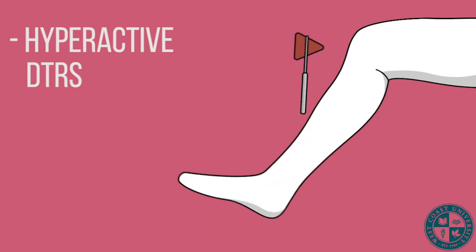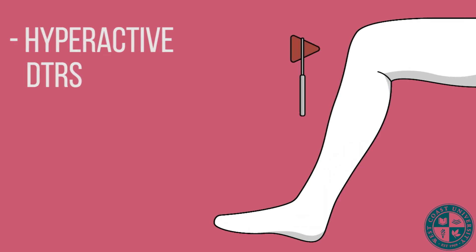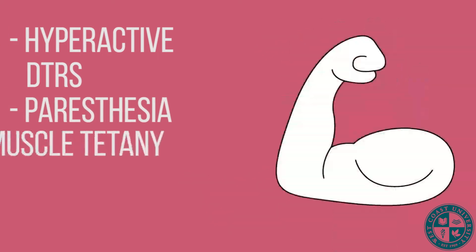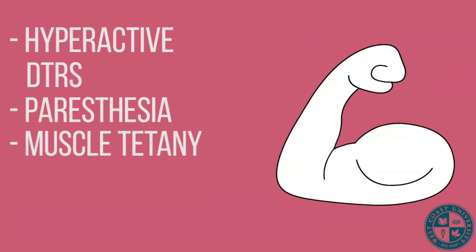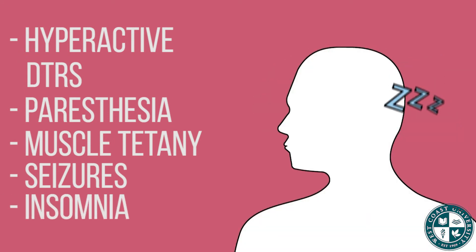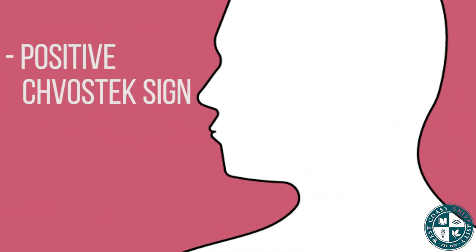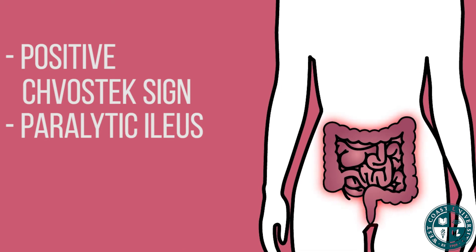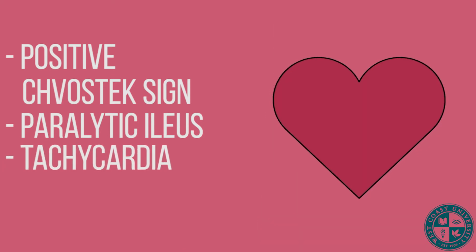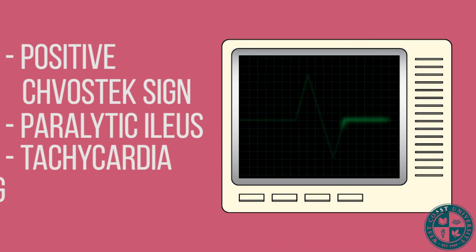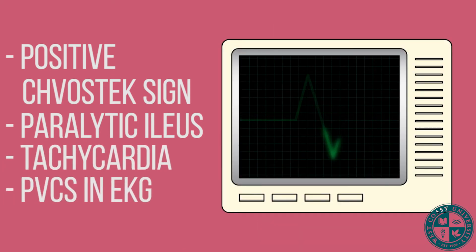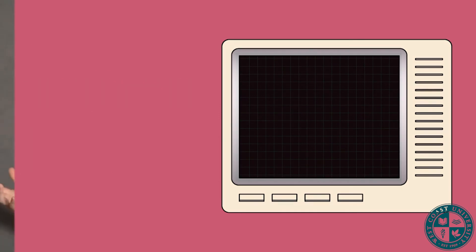What will this client look like? The client may present with hyperactive DTRs, paresthesias, muscle tetany, seizures, insomnia, a positive Chvostek sign, a paralytic ileus, tachycardia, and PVCs on their EKG, to name a few.